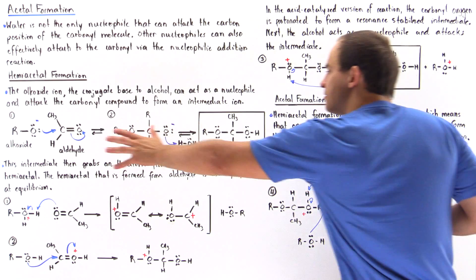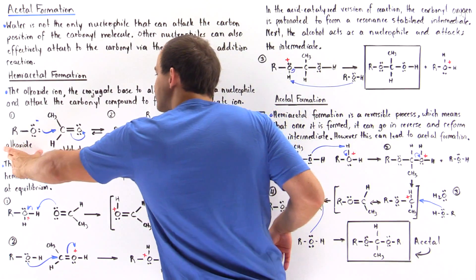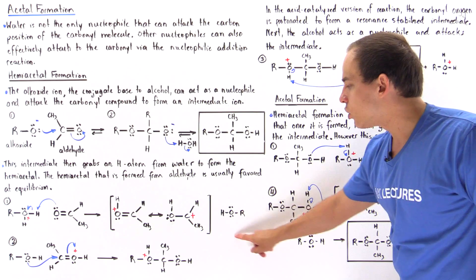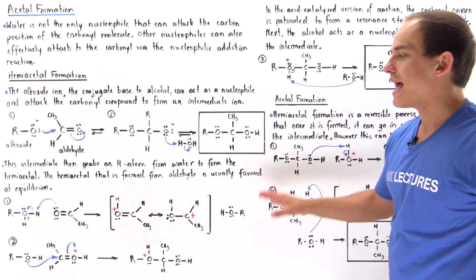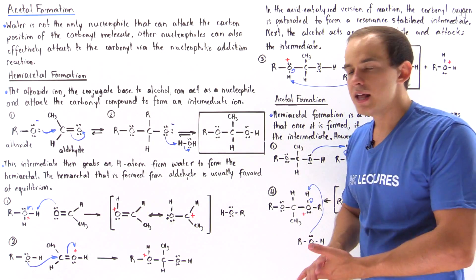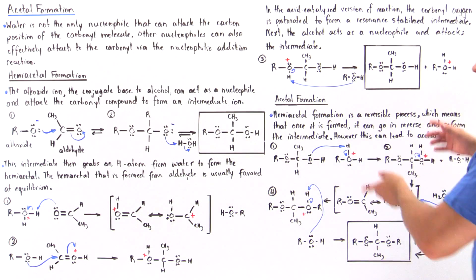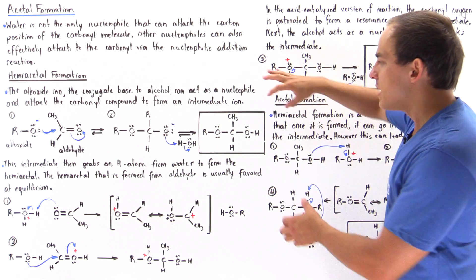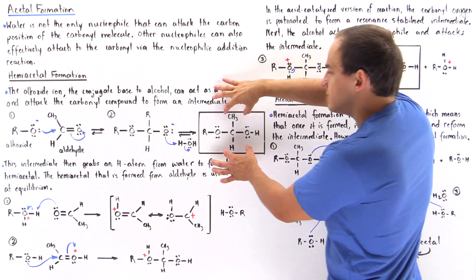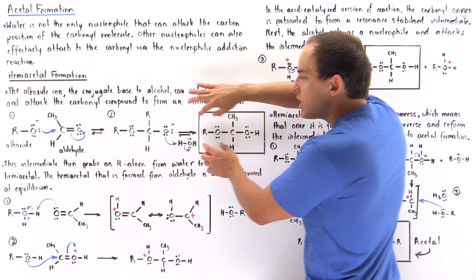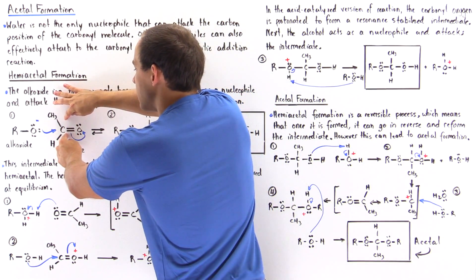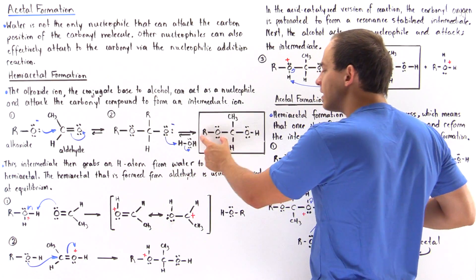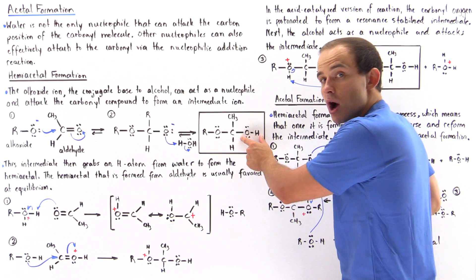In the base-catalyzed step, the alkoxide acts as the nucleophile, and in the acid-catalyzed step, the alcohol acts as the nucleophile. Both pathways lead to hemiacetal formation. The hemiacetal contains the two groups attached to the carbonyl carbon — the alkoxide group and the hydroxide group.